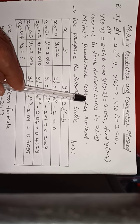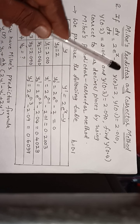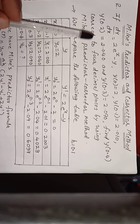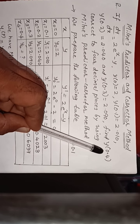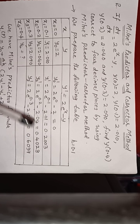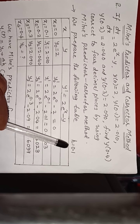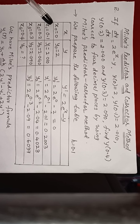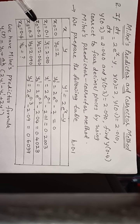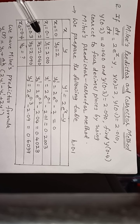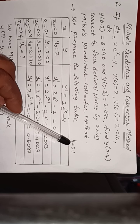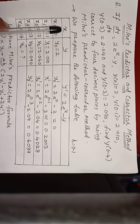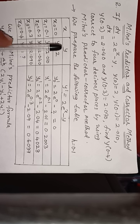By using Milne's Predictor and Corrector Method, x0, x1, x2, x3, and last x4 — we have to calculate. We prepare the following table. Here h is equal to 0.1. The step size difference between x0, x1, x2, x3 is 0.1. That is, h = 0.1. In the chart we have columns x, y, and y dash.